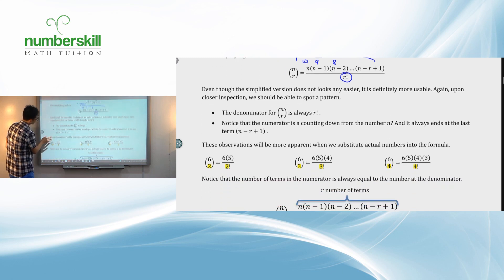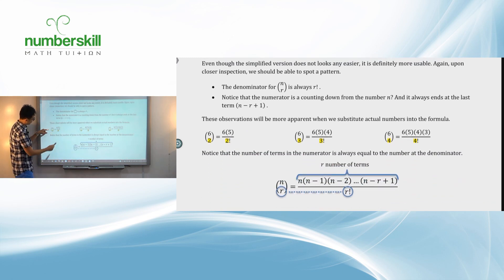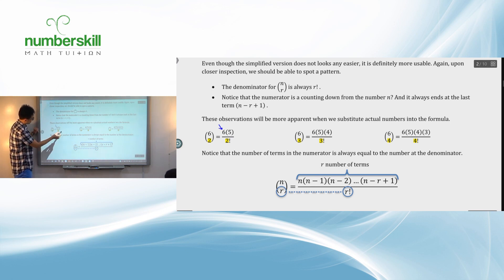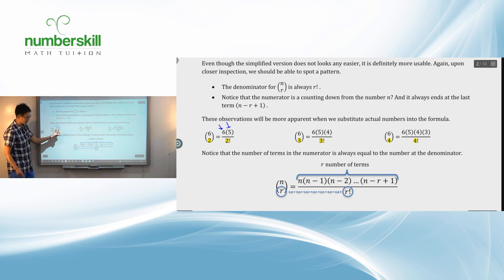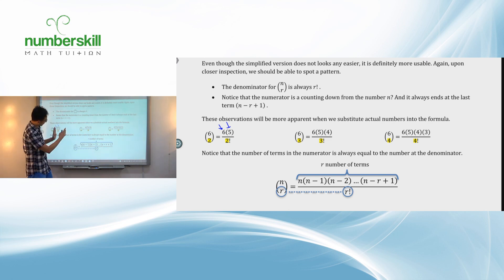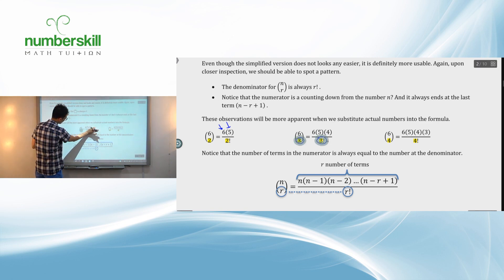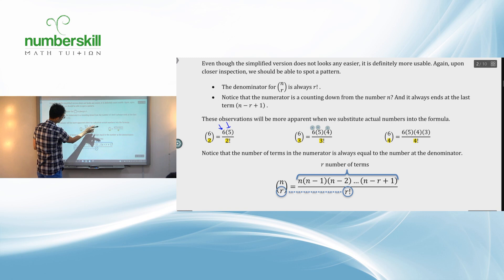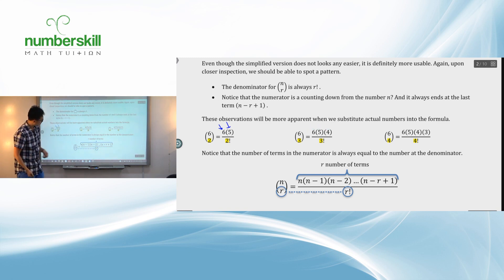Let's look at 6C2. The denominator is simply 2 factorial. The numerator starts at 6 and you count down — but you stop at 5, not 4, because the bottom number is 2, meaning the numerator must have only 2 terms: 6 times 5. For 6C3, similarly, the denominator is 3 factorial — which is 3 times 2 times 1 — and the numerator is 6, 5, 4: you count down 3 times and stop at 4.